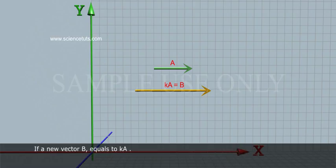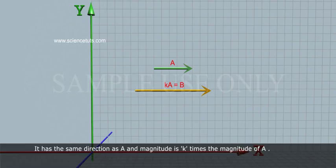If the new vector B equals KA, it has the same direction as A and magnitude is K times the magnitude of A.